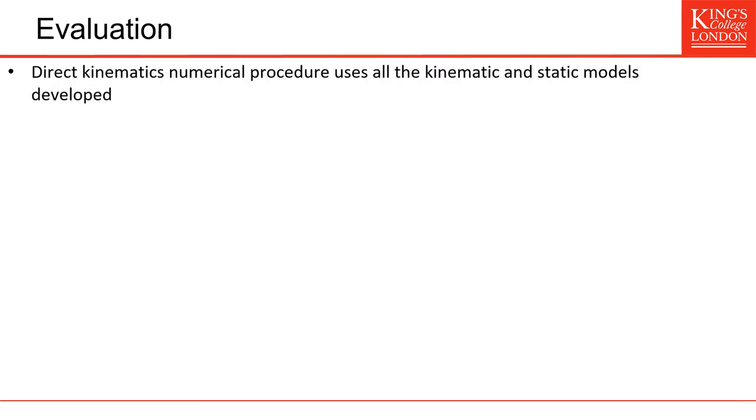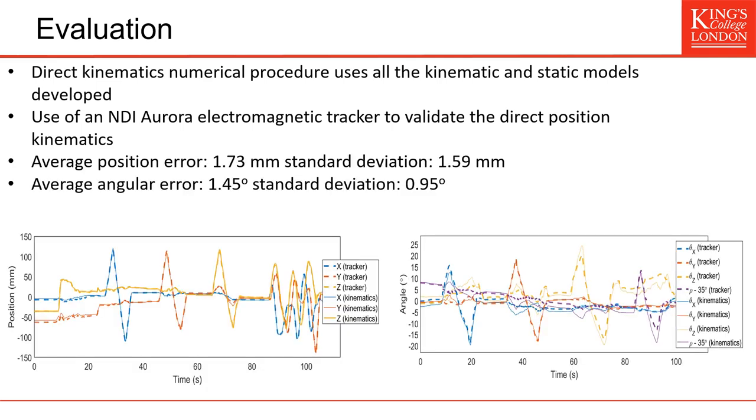Then we wanted to use this prototype to evaluate the models that we previously developed. So we decided to evaluate the direct kinematic numerical procedure, because it used all the models that we developed, including the inverse position kinematics, inverse velocity kinematics, and the statics. We used an external electromagnetic tracker. So there were some trackers that were attached to different parts of the platform. And they were connected to this electromagnetic aurora device. That gave us external validation of the position, orientation, and grasping of the platform. So on the left you can see the result for the position tracking compared to the kinematic calculation. And on the right you can see the equivalent for the orientation and the grasping as well. The results were relatively good for a platform that has a width of 700 mm. So for the position error it was less than 2 mm, and for the angular error it was 1.45 degrees.